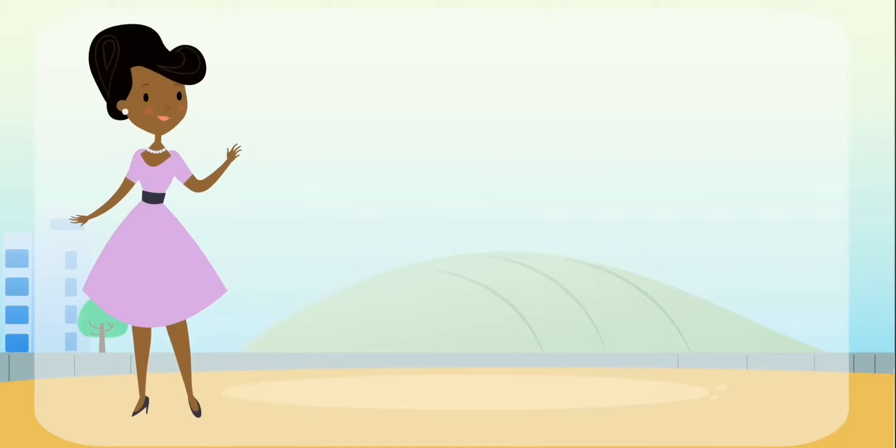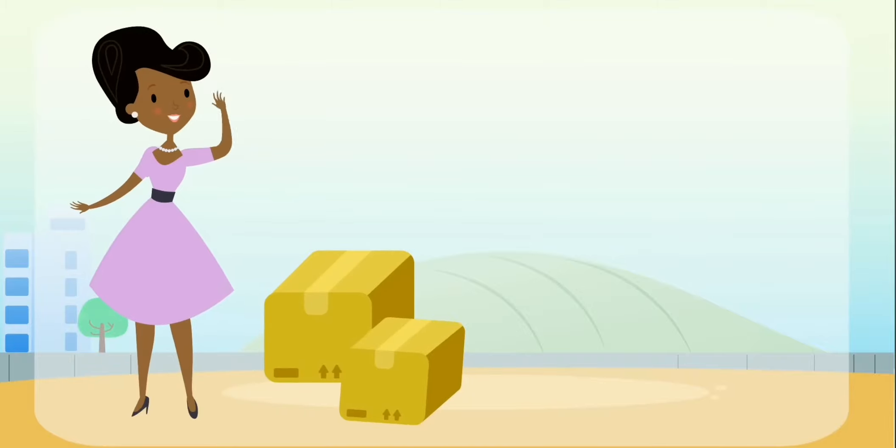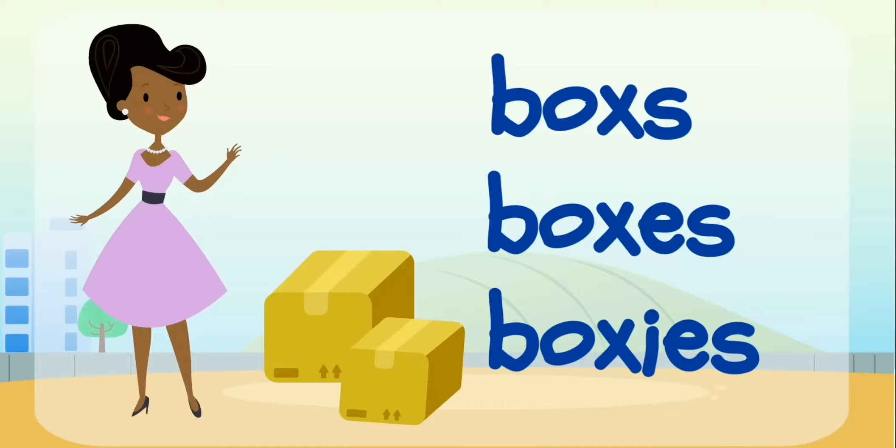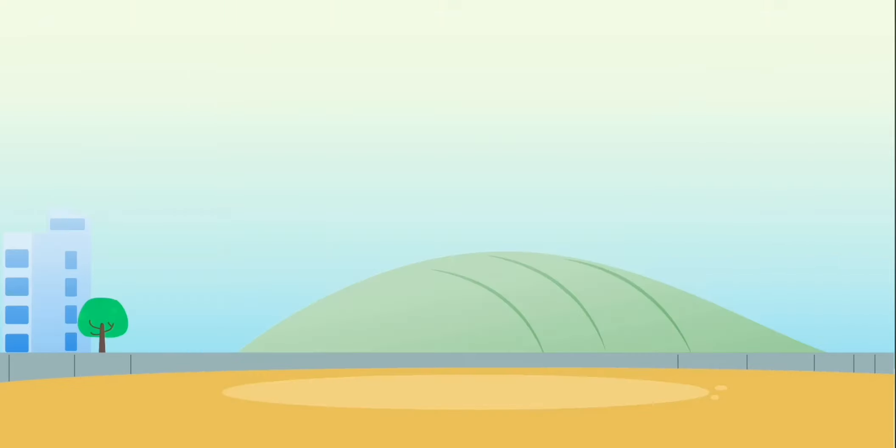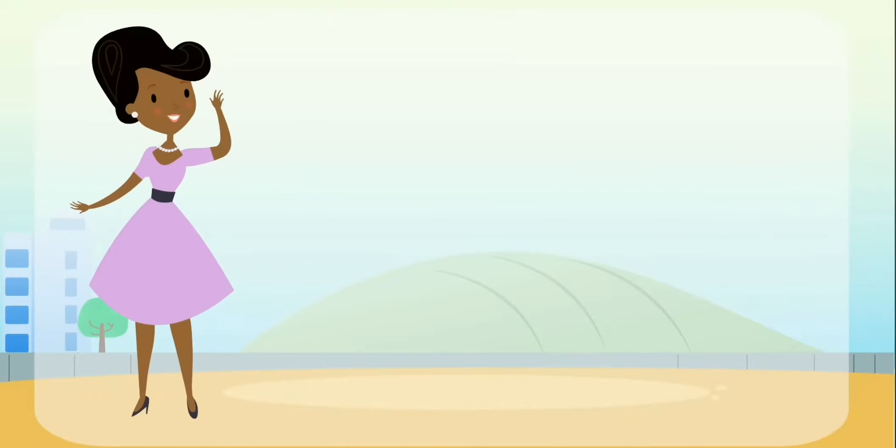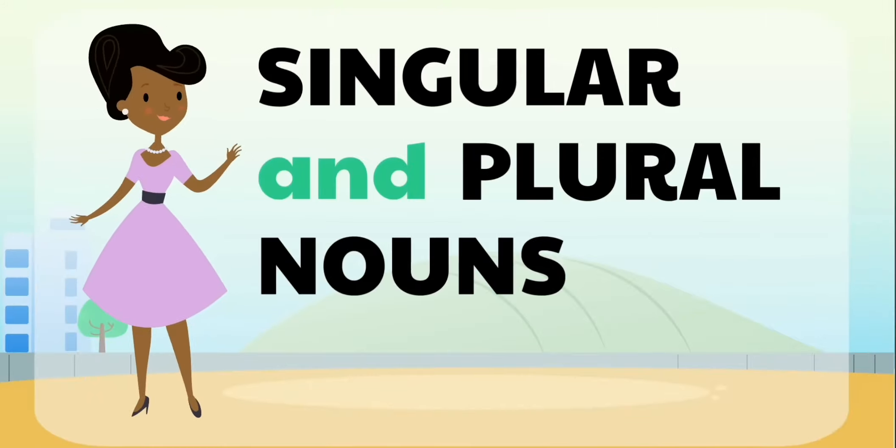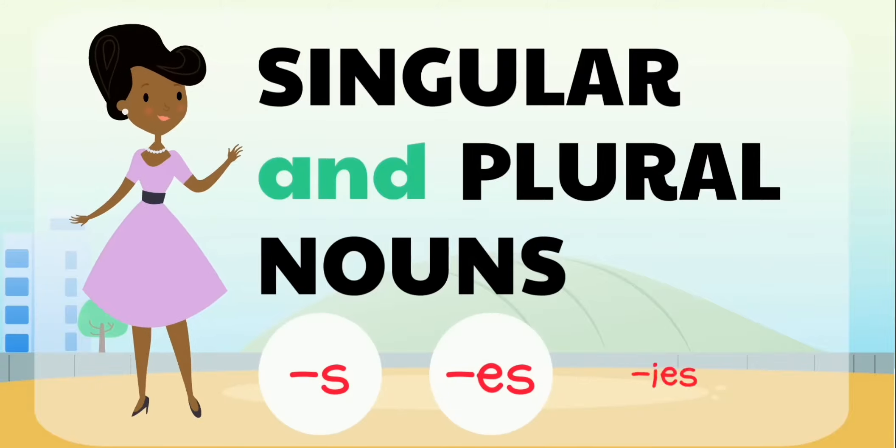Hi there. Can you tell me which word is spelled correctly? Boxes, boxes, boxes. Keep this in mind because we're going to come back to it later. In this video, we're going to learn about singular nouns and plural nouns that end in s, es, and ies.